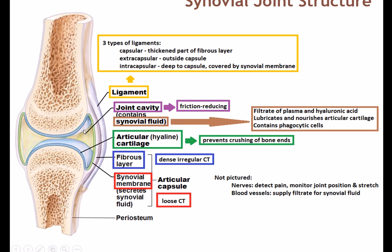The joint cavity has an articular capsule around it. There's an outer fibrous layer of dense irregular connective tissue, and then an inner synovial membrane of loose connective tissue, which is what secretes the synovial fluid that fills the cavity. Synovial fluid is basically filtered blood plasma. Not only is the cavity a great friction-reducing structure, but phagocytic cells inside the synovial fluid can help clean up debris. The fluid also nourishes the articular cartilage — hyaline cartilage — covering both bone ends. Nerves and blood vessels are also associated with these joints.